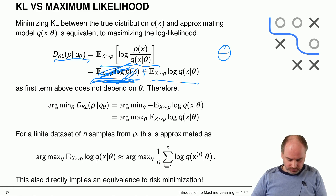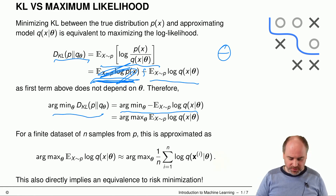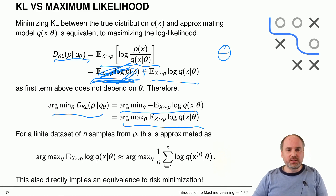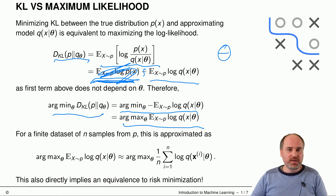So this minimization of Kullback-Leibler is equivalent to maximizing the expectation with respect to p of x of log q of x, and we solve this maximization problem for the optimal parameter vector theta.